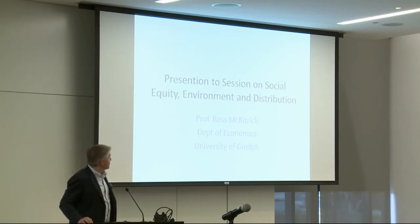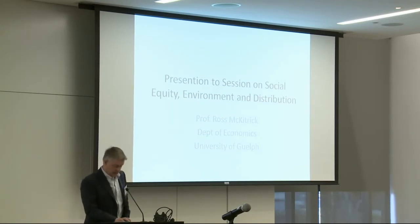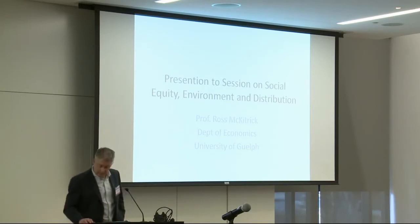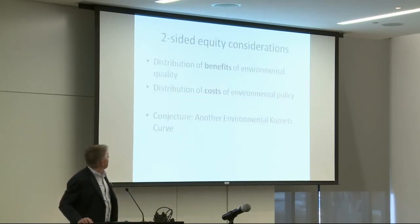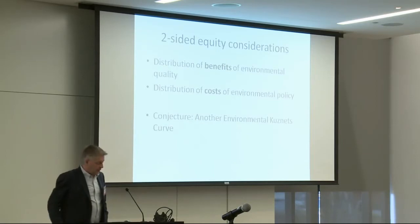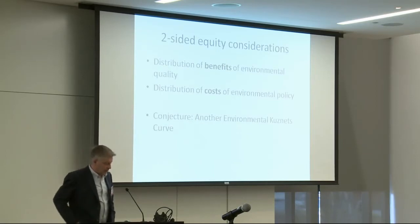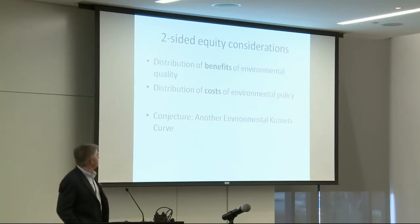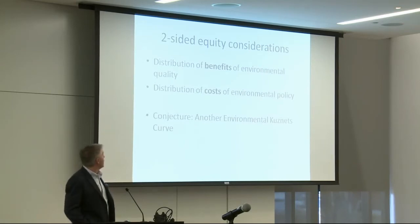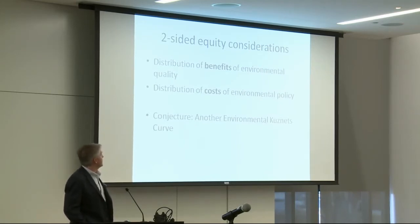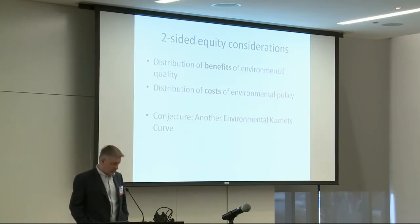I want to say something about equity. When we talk about equity and the environment, there are two sides to consider: the distribution of the benefits of environmental quality, and the distribution of the costs of environmental policy. I'm going to conjecture the existence of another environmental Kuznets curve.